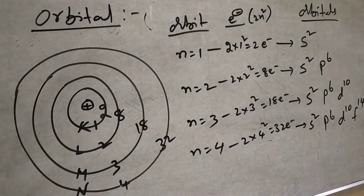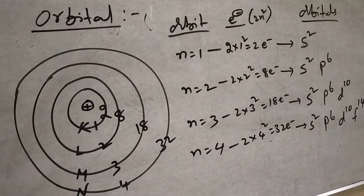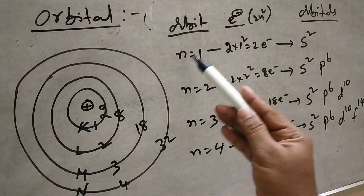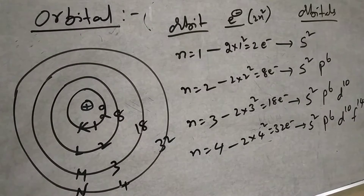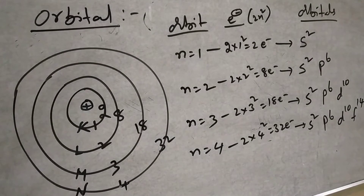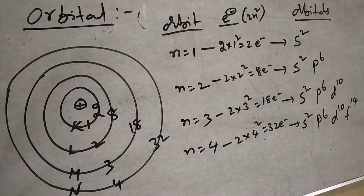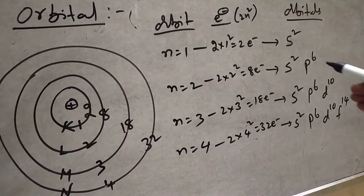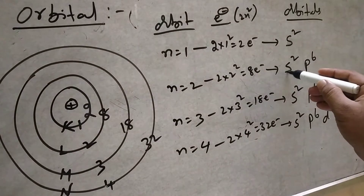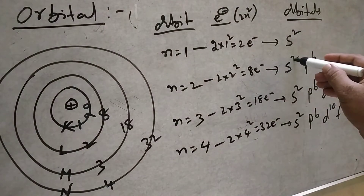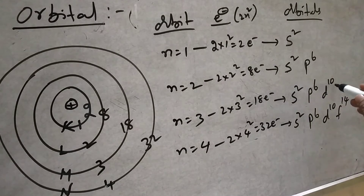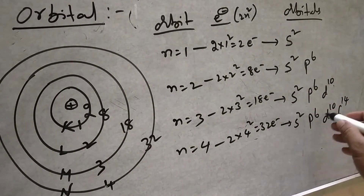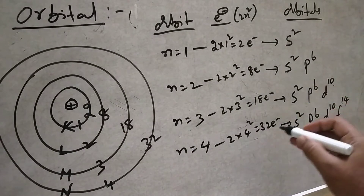The 1st orbit contains 2 electrons. The 2nd orbit contains S as well — 2 plus 6 equals 8. Then 2 plus 6 plus 10 equals 18. Then 2 plus 6 plus 10 plus 14 equals 32.